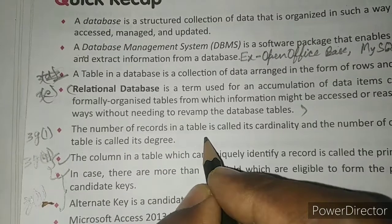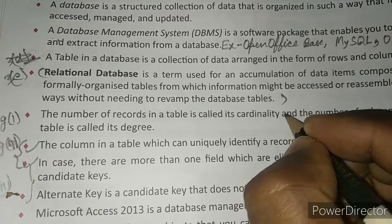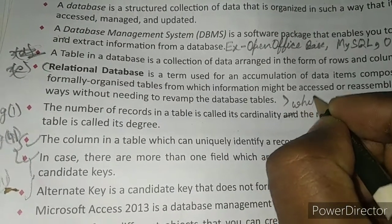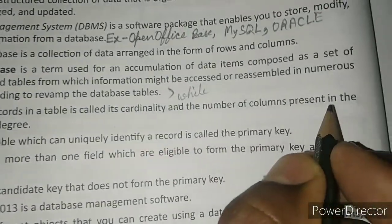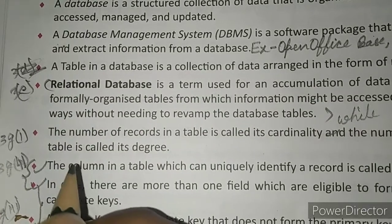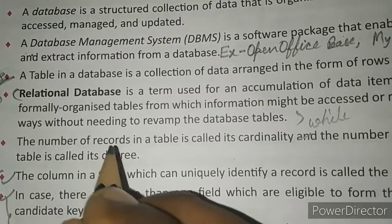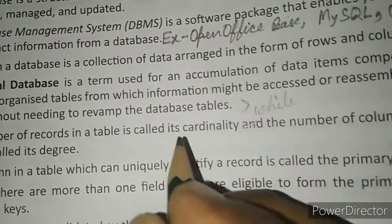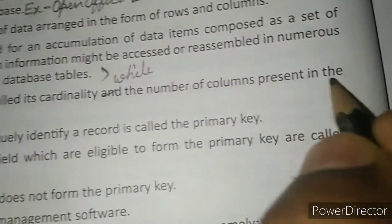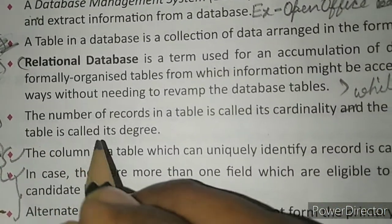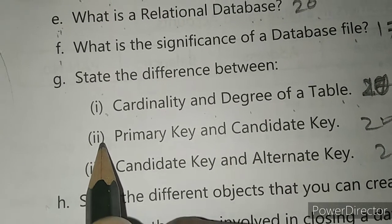The number of records in a table is called cardinality, while the number of columns present in the table is called its degree. Now let us see the second part of question G.